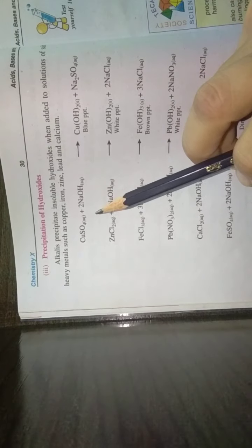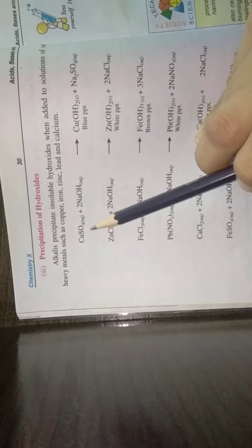Now here we have copper sulfate. Copper sulfate will react with sodium hydroxide. Copper has two plus charge and hydroxyl has minus charge. It means that two hydroxyl groups will combine to copper plus two and it will form cuprous oxide.